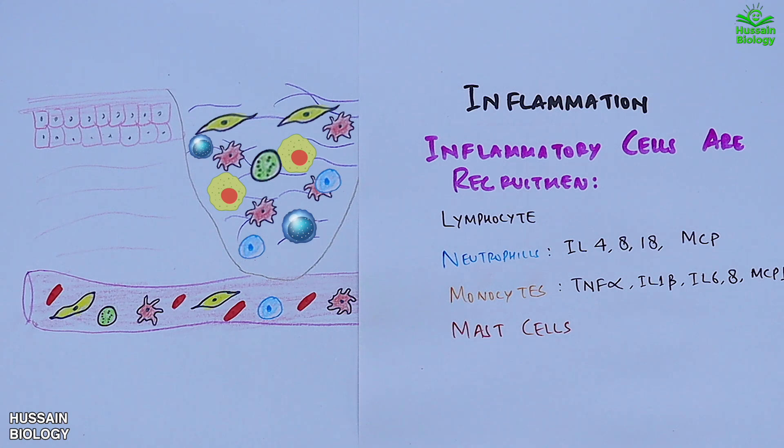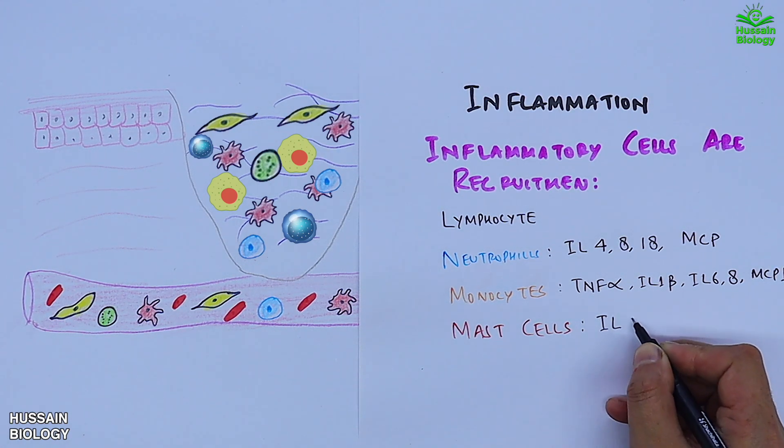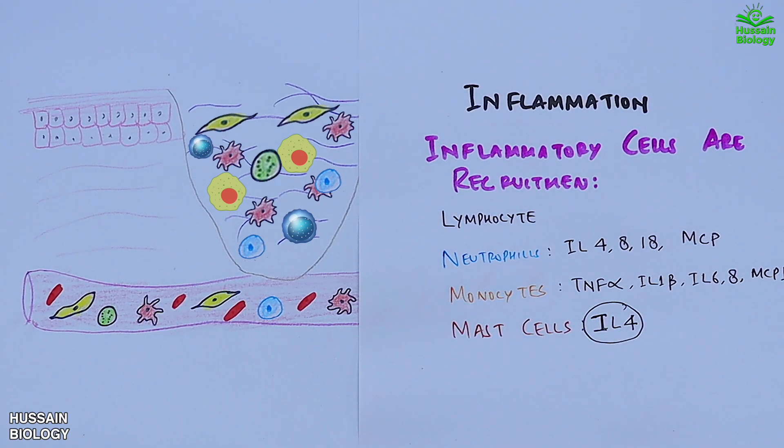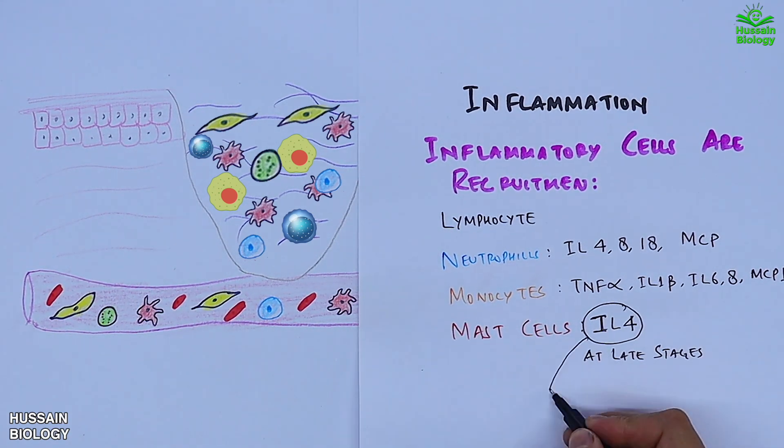Then at the end of inflammation, the mast cells are last to be recruited, which secrete this interleukin-4 more and more. And we know this interleukin-4 inhibits the production of pro-inflammatory molecules, thus it lessens the inflammation.